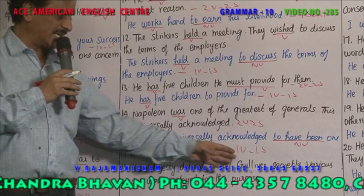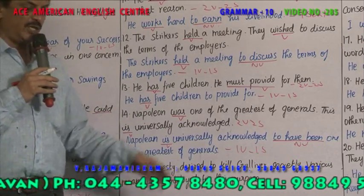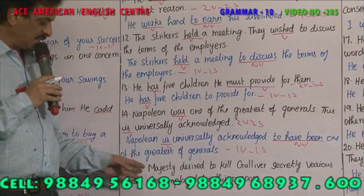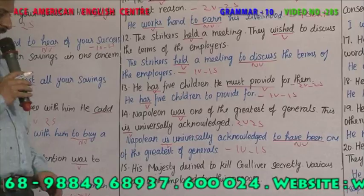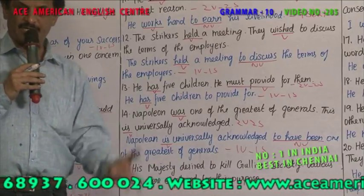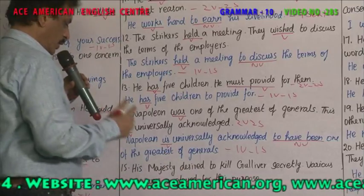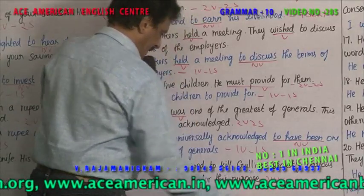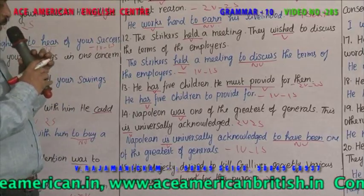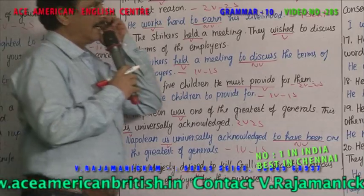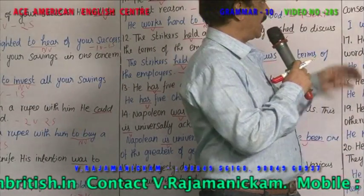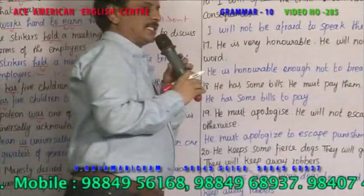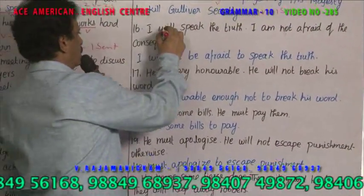Example 10: His Majesty desired to kill Gulliver secretly. Various means were employed for this purpose. 'Desired' and 'were employed' are both verbs — two verbs, two sentences. Combined: 'Various means were employed by his Majesty to kill Gulliver secretly.' 'Were employed' is the single verb; 'to kill' is the infinitive. One verb, one sentence.